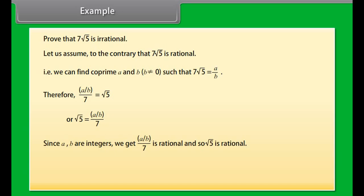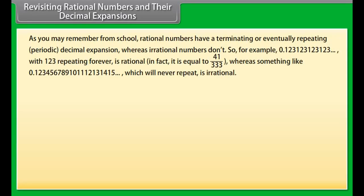Example: Prove that 7√5 is irrational. Let us assume to the contrary that 7√5 is rational. That is, we can find co-prime A and B, where B is not equal to 0, such that 7√5 equals A upon B. Therefore, square root of 5 equals A upon (7B). Since A upon 7B is rational, square root of 5 would be rational. But this contradicts the fact that square root of 5 is irrational. This contradiction has arisen because of our incorrect assumption that 7√5 is rational.